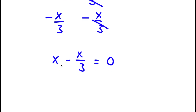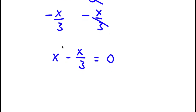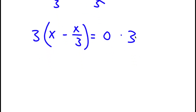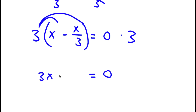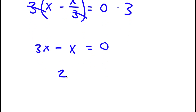From here, I'm actually going to multiply both sides by 3. So 0 times 3 is simply 0. And 3 times x minus x over 3 — I'm going to distribute this to all my terms. 3 times x is 3x. And negative x over 3 times 3 — these two 3s cancel out — so I'm just left with negative x. So I have 3x minus x equals 0, which is 2x.